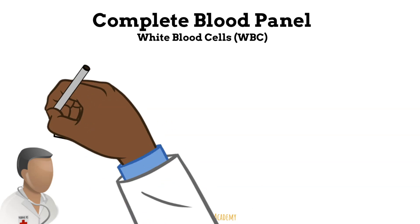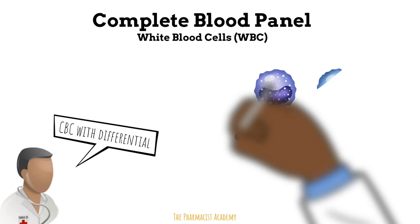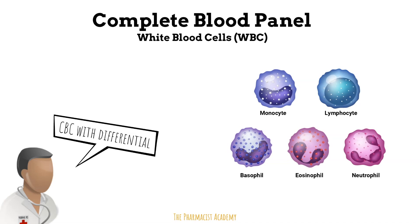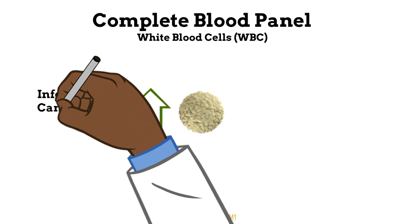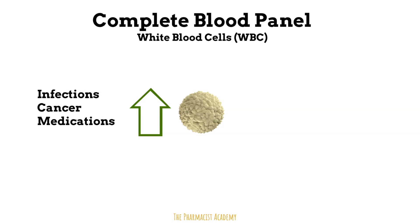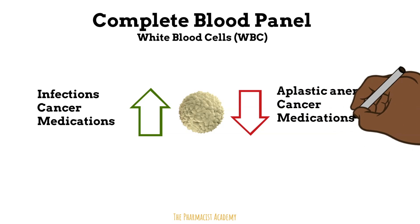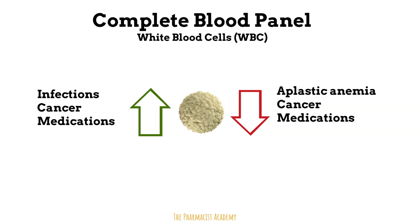Sometimes you may hear the term CBC with differential, or CBC with diff. That simply means the white blood cells are divided into monocytes, lymphocytes, basophils, eosinophils, and neutrophils — each with their own value. If it's not a CBC with differential, it usually just gives the total white blood cell count. White blood cells are usually higher in patients with infections and cancers, depending on the type of white blood cell affected. Certain medications can also increase white blood cells. Decreased white blood cell levels are seen in patients with aplastic anemia, patients with cancer, and from medications — for example, chemotherapy can reduce the levels of neutrophils.